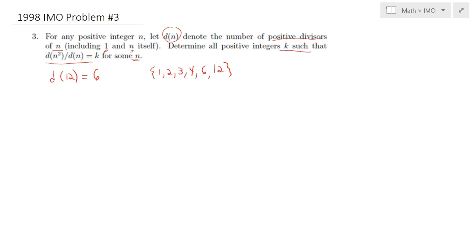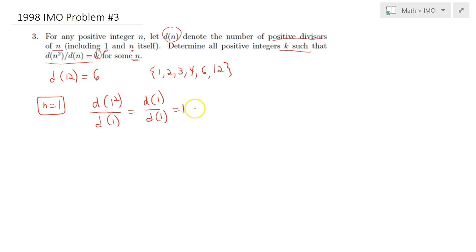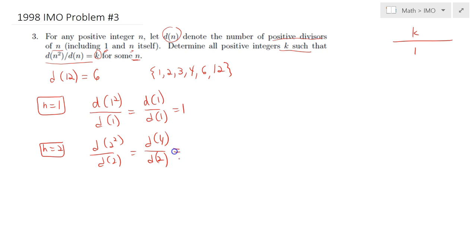So what values of k are attainable? If n = 1, we get d(1²)/d(1) = d(1)/d(1) = 1, so k = 1 works. For n = 2, we have d(4)/d(2) = 3/2, which is not an integer. For n = 3, d(9)/d(3) = 3/2, also not an integer.